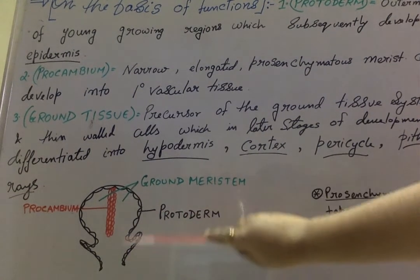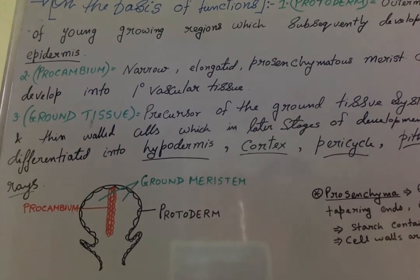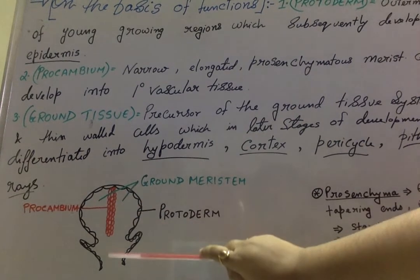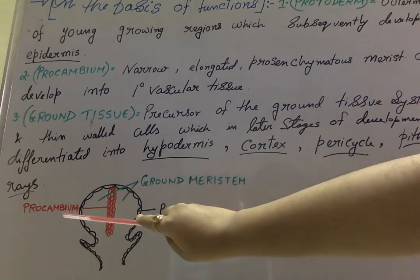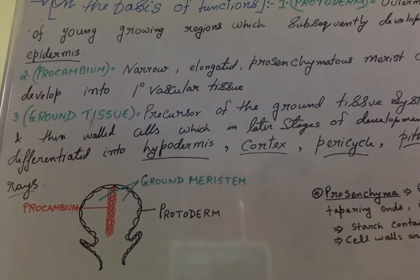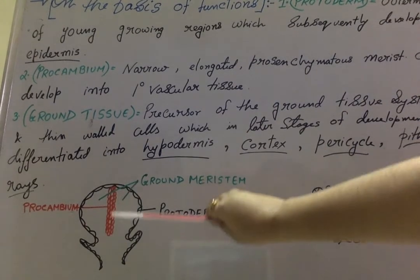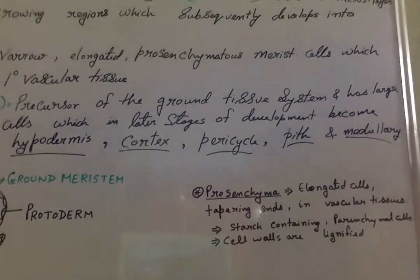The white space here is known as the ground meristem or ground tissue, representing the ground tissue system. The red cells here — not drawn in continuation, just to give an idea — are procambium, later developing into primary vascular tissue. As you can see, these are elongated, meristematic cells.